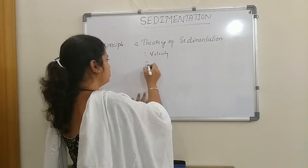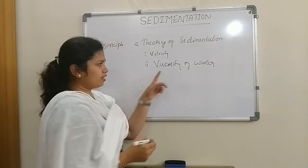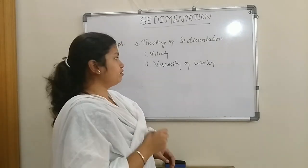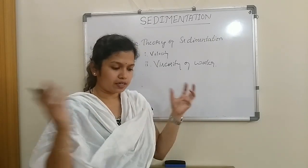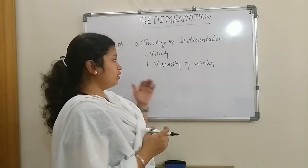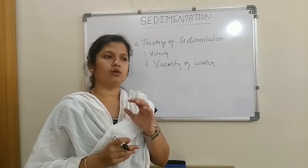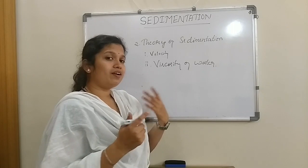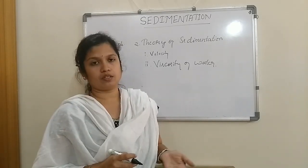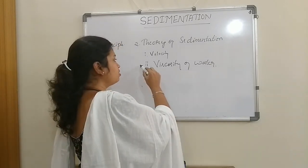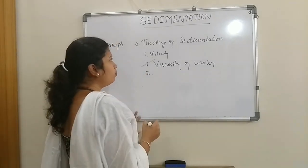The next important factor is the viscosity of water. Since viscosity is directly related with temperature, when water is more viscous the particles are more densely arranged, which retards flow and hinders the settlement of particles. Warm water is less viscous compared with cold water, but in actual practice in a treatment plant, there is a large amount of water to treat, so we cannot go for heating the water or increasing its temperature. Therefore this is not a parameter under our control in a treatment plant.